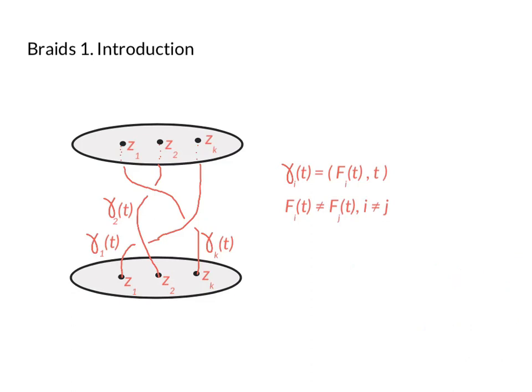So at time zero, the i-th strand of our braid starts at the point z_i. At time one, the i-th strand of our braid ends at the point z_{s(i)} for some permutation s of the numbers one through k.